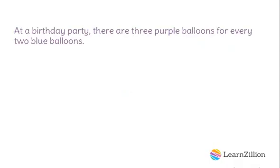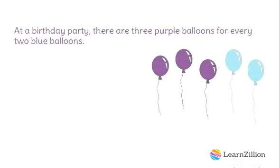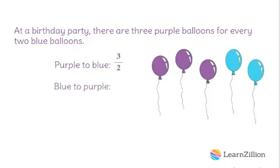Here we have a similar situation, but this time we have a ratio of three purple balloons for every two blue balloons. We can represent this situation with a ratio of purple balloons to blue balloons, which is a ratio of three to two. We can also represent this as a ratio of blue to purple. We have two blue balloons and three purple balloons, which gives us a ratio of two thirds. These two are again called part-to-part ratios — they compare the quantity of purple balloons to the quantity of blue balloons.